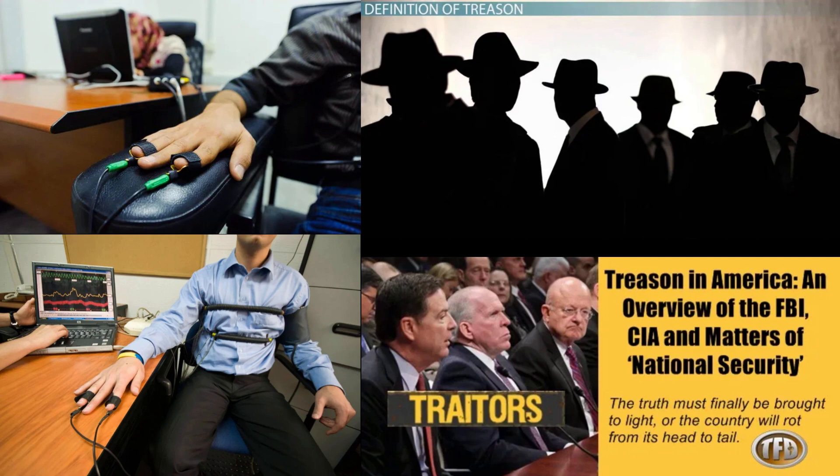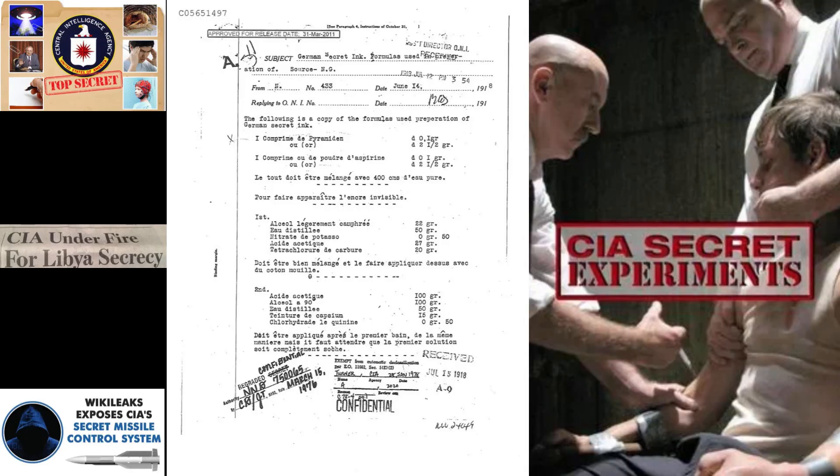Additionally, CIA agents are often required to work undercover, assuming false identities to protect their true identities and the nature of their work. This culture of secrecy has been both praised and criticized. Advocates argue that it is necessary to protect national security interests and the safety of the agents involved. Critics, however, contend that the secrecy can enable abuses of power and hinder transparency and accountability.